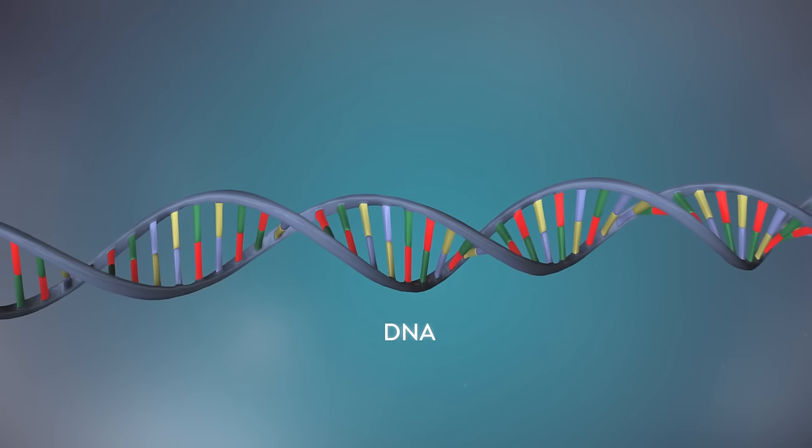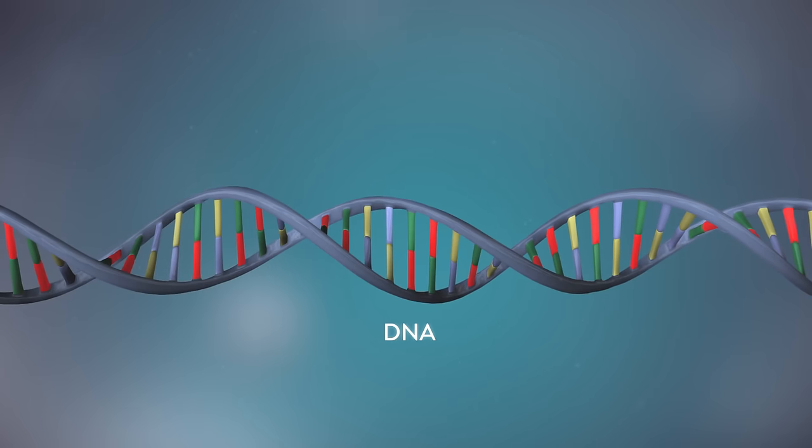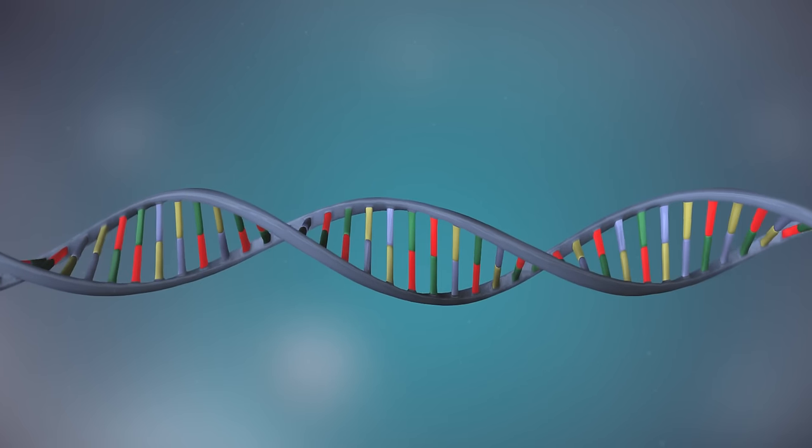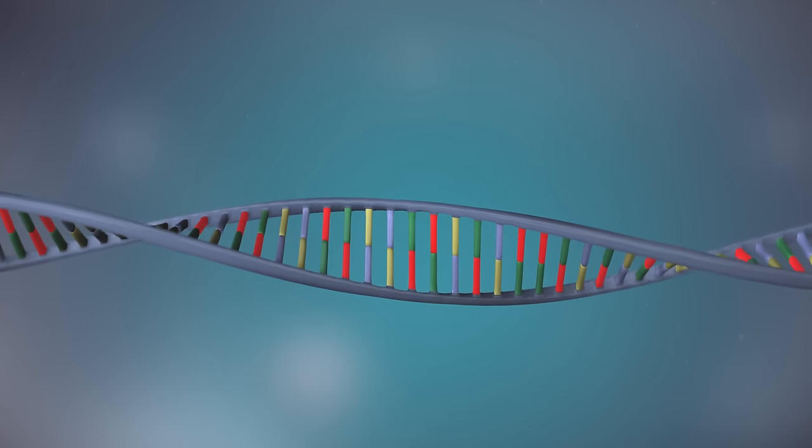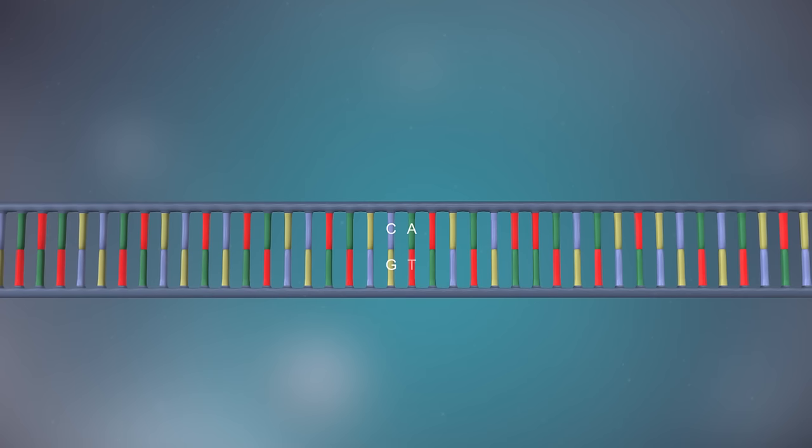DNA is a molecule made up of two strands twisted around each other in a double helix shape. Each strand is made up of a sequence of four chemical bases represented by the letters A, C, G and T.